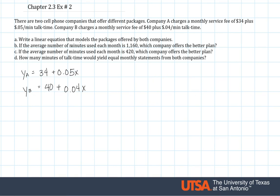Part C essentially asks the same question as part B, just a different number. It says that if the average number of minutes used each month is 420, which company offers the better plan? So it's the same. The only thing that we're going to do differently is we're going to let x equal 420 this time. So for YA, we have 34 plus this times 420 minutes. And then this is 21 plus 34. So for 420 minutes, company A is going to charge $55.